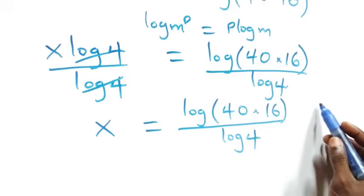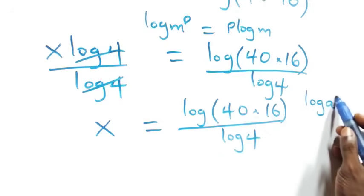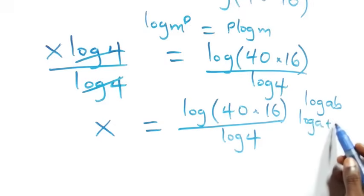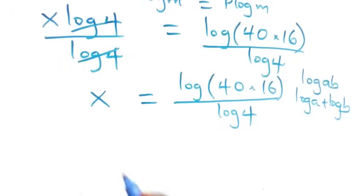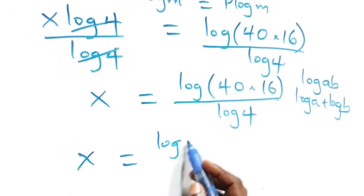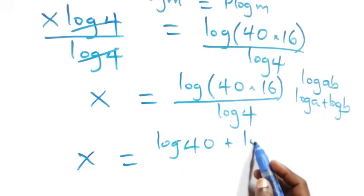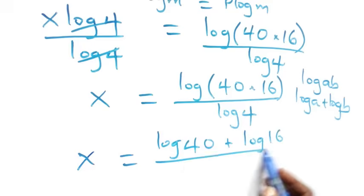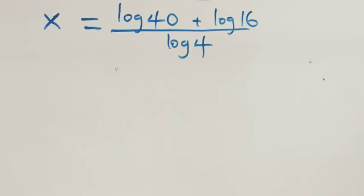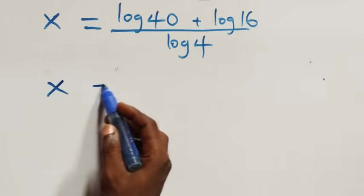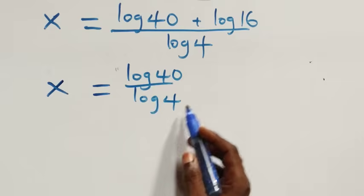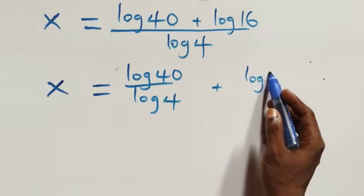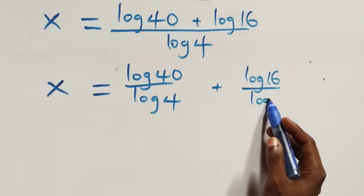This follows the law of logarithms: when we have log of a times b, it's the same thing as log a plus log b. So what we have here becomes x equals log 40 plus log 16 over log 4. Then next step, we separate this into two fractions: x equals log 40 over log 4 plus log 16 over log 4.